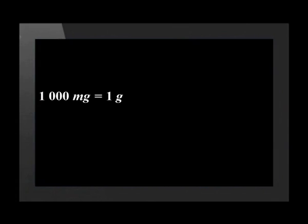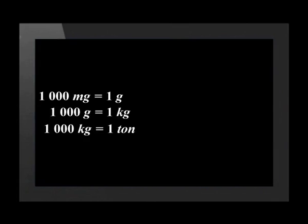Mass is typically measured in milligrams, grams, and kilograms. We can also measure very heavy objects in tons. One thousand milligrams is equal to one gram, one thousand grams is equal to one kilogram, and one thousand kilograms is equal to one ton.